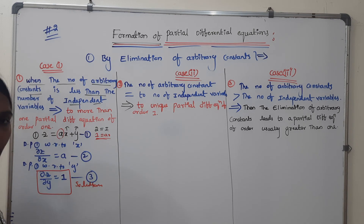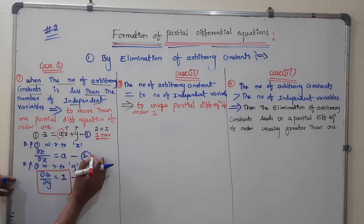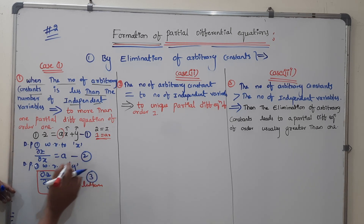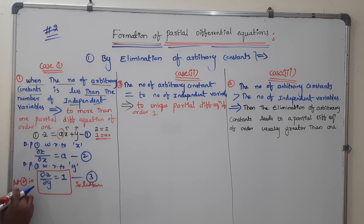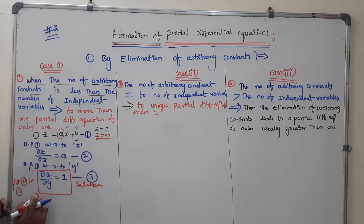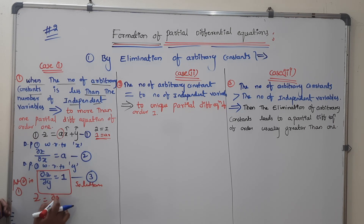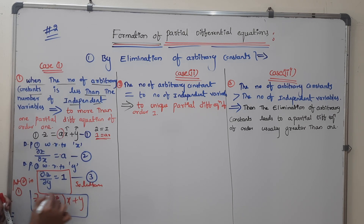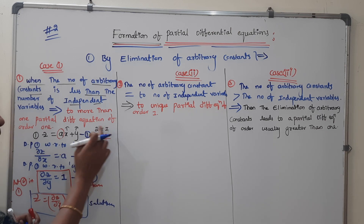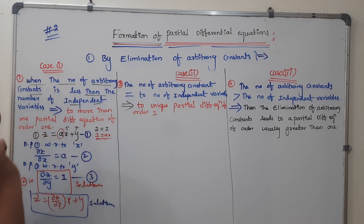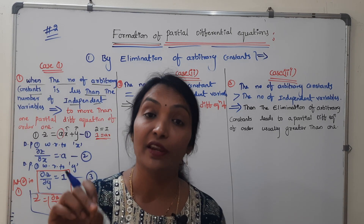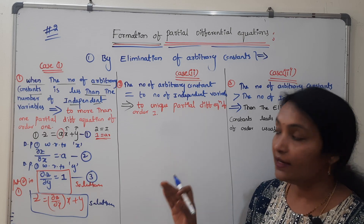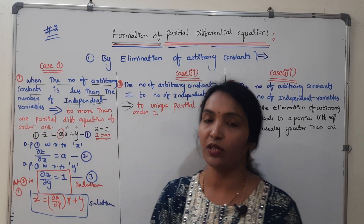Now, we can substitute: put equation 2 in equation 1. Substituting 'a' value from equation 2: z is equal to (dou z by dou x) times x plus (dou z by dou y) times y. This means independent variables are not equal to arbitrary constants, so there are two solutions.